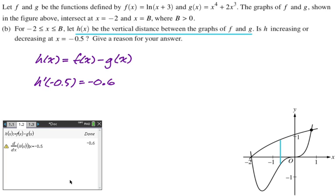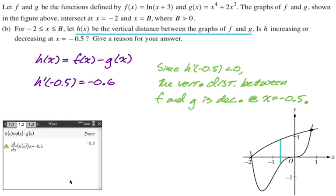So I get h prime is negative, which means that h is decreasing. So I'm going to write up, since h prime of negative 0.5 is less than 0, the vertical distance between f and g is decreasing at x equals negative 0.5. Alright, let's take a look at the next part.